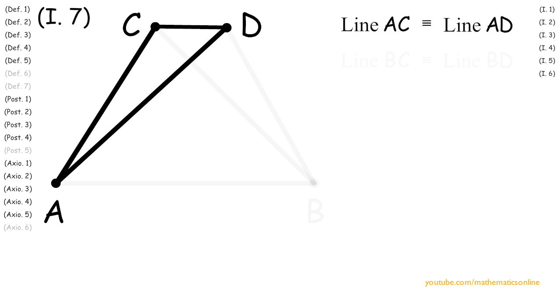Now since triangle ACD has two sides that are congruent, then by Proposition 5 angle ACD is congruent to angle ADC.